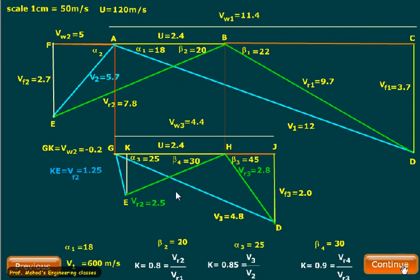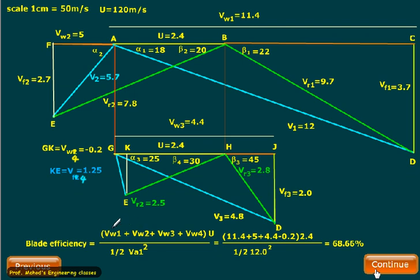In this fashion we can complete the first stage as well as second stage. This value is 11.4, and Vw4 you have to read as minus 0.2 centimeters, and Vf4 equals 1.25. To obtain the blade efficiency, we'll compute the addition of all velocity vectors. This velocity vector is rightward so positive, this is leftward so also positive, this one is rightward so positive, and this one is also rightward. This outlet is outward, so that is why it was taken as minus value, multiplied by U divided by half V1 squared. Substitute all these values: 11.4 is Vw1, Vw2 is 5, Vw3 is 4.4, and Vw4 since rightward is minus 0.2. U is 2.4 and half V1 squared, which is V1 squared is 12 squared. Your blade efficiency comes out to be 68.66%.